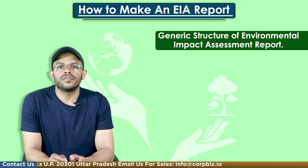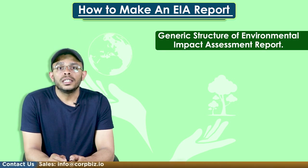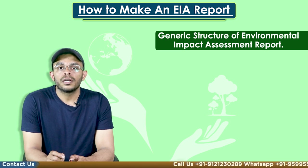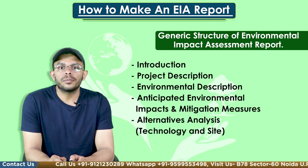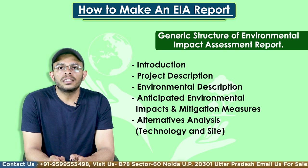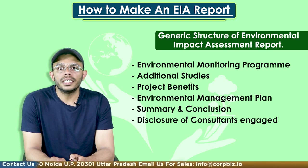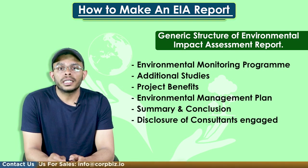Let's understand the generic structure of the environmental impact assessment report. According to the Ministry of Environment and Forests, the EIA guidelines were issued in 2006 for developmental projects. The generic format of the EIA document should include the following: introduction, project description, environmental description, anticipated environmental impacts and mitigation measures, alternative analysis for technology and site, environmental monitoring program, additional studies, project benefits, environmental management plans, and summary and conclusions.